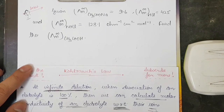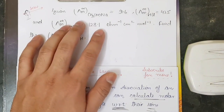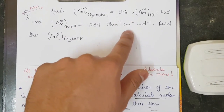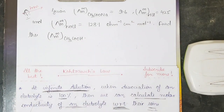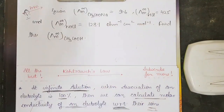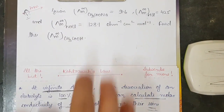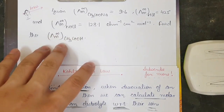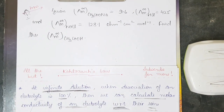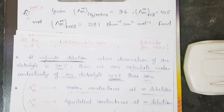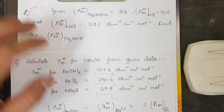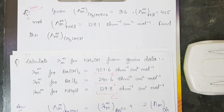Here is a homework question: λm∞ for CH3COONa = 91.6 Ω⁻¹ cm² mol⁻¹, λm∞ for HCl and λm∞ for NaCl are also given. Find λm∞ for acetic acid (CH3COOH) from this data. Please let me know your answer in the comment section. I hope this video helped you understand the entire theory and this important question on Kohlrausch's law. If you have any doubts, ask me. Thank you and all the best!